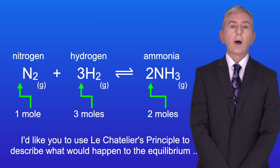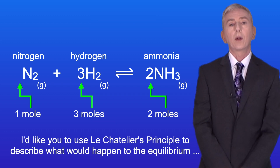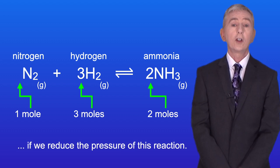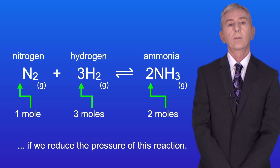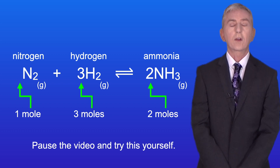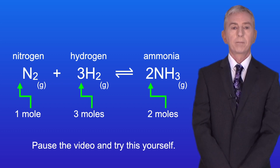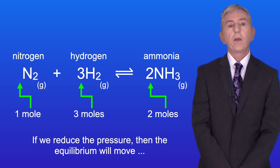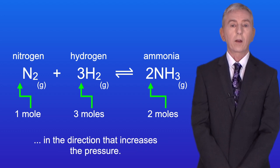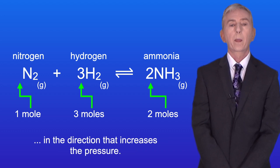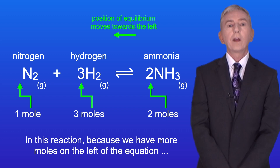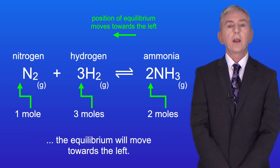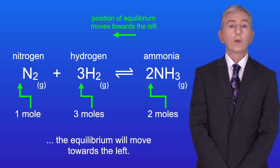Now I'd like you to use Le Chatelier's principle to describe what would happen to the equilibrium if we reduce the pressure of this reaction. Pause the video and try this yourself. If we reduce the pressure then the equilibrium will move in the direction that increases the pressure. In this reaction, because we have more moles on the left of the equation, the equilibrium will move towards the left.